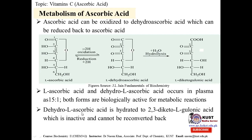Dehydroascorbic acid, formed by oxidation from ascorbic acid, can be hydrolyzed. Upon hydrolysis it gives 2,3-diketogulonic acid — diketogulonic because it has two ketone groups. This form is irreversible and cannot be converted back to ascorbic acid. So through hydrolysis, vitamin C is permanently lost since it cannot be regenerated from 2,3-diketogulonic acid.